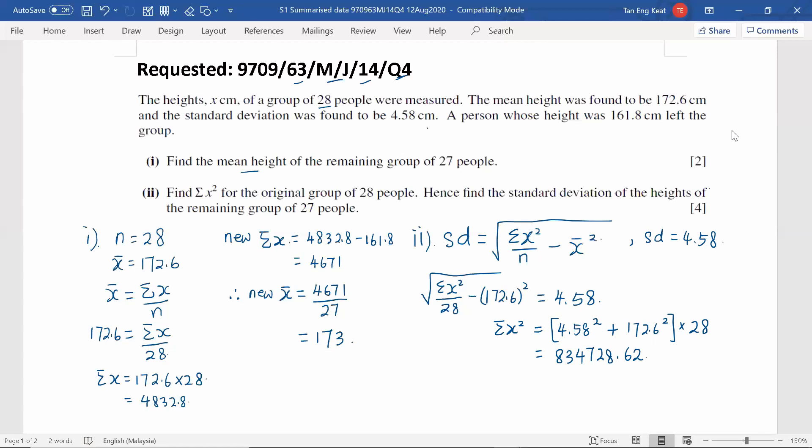So that is the first part of second question. So once we got this sigma X squared, hence we are able to find out the standard deviation of the height of the remaining group of 27 people, which means we are going to find out the new sigma X squared for the remaining 27 people.